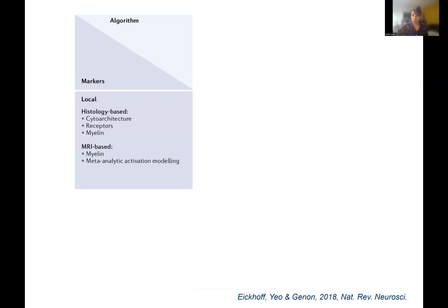On the one hand, we have local features that probe local properties of brain tissues — histology-based features such as cytoarchitecture, receptor density, or myelin. But we also have MRI-based features such as myelin estimated from MRI data, or meta-analytic activation modeling, which looks at the functional response of brain regions across a range of activation paradigms. This should not be confused with meta-analytic connectivity modeling.